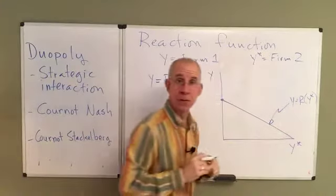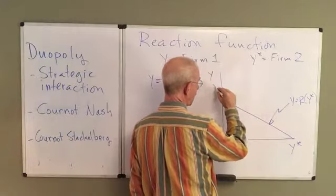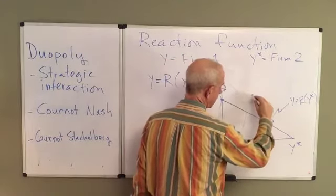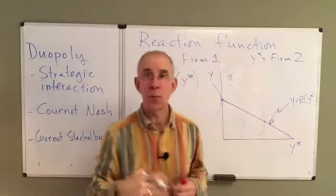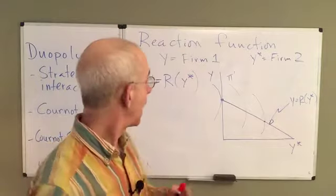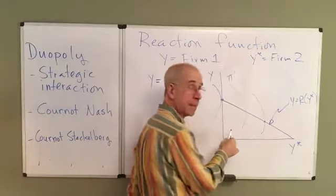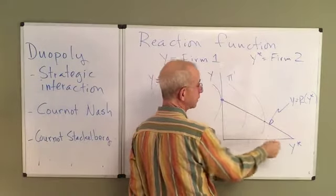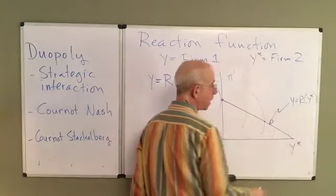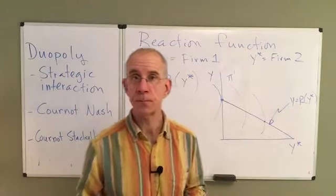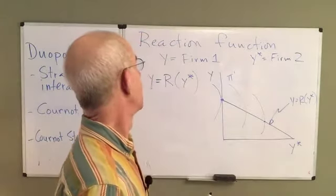The more the other firm produces, the lower the profits are going to be for this firm. We can look at the profits of firm one using an isoprofit function, where we get the highest possible profits given the other firm's behavior. There's going to be a combination of profits associated with firm two's reaction. As you move down the reaction function, you're getting a lower level of profits for firm one. This comes from the first-order conditions — the profit-maximizing decision of firm one.